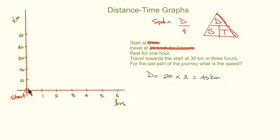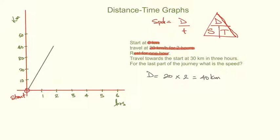That's very important — we travel for two hours and go all the way up to 40. So we draw that in: two hours to 40. Now the next part says we need to rest for one hour, which means we're resting between two and three hours. Since we're already up at 40, I'm literally just going to draw that in as a horizontal line, resting on three hours.